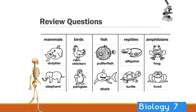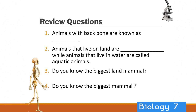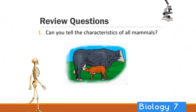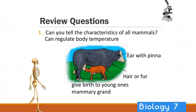Animals with a backbone are known as vertebrates. Animals that live on land are called terrestrial animals, while animals that live in the water are called aquatic animals. The biggest land mammal is an elephant, and the biggest mammal of all is the whale. The characteristics of all mammals are: ears with pinna, hair or fur, they give birth to young ones, they breastfeed with the mammary gland, and they can regulate their body temperature — often known as warm-blooded.